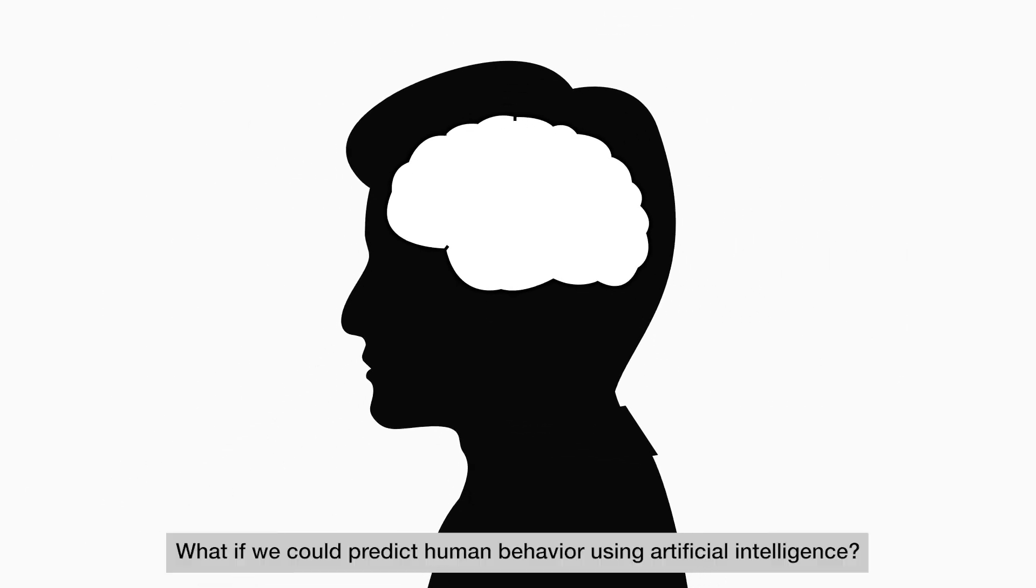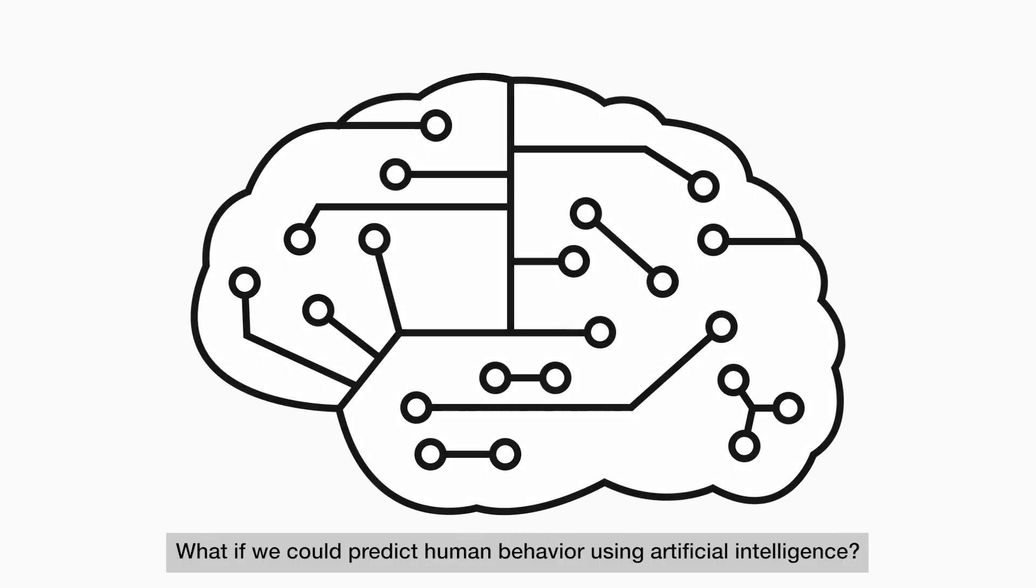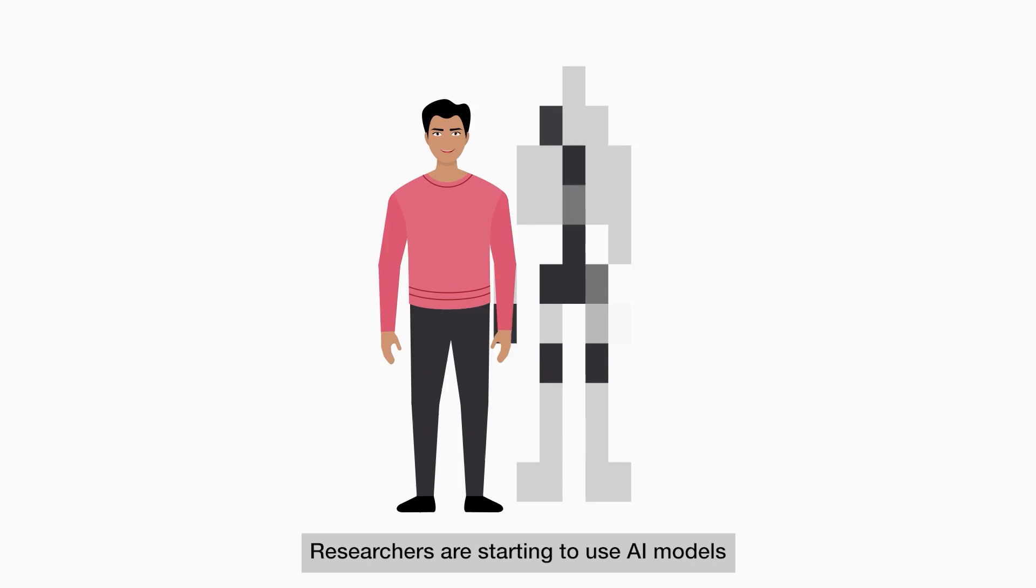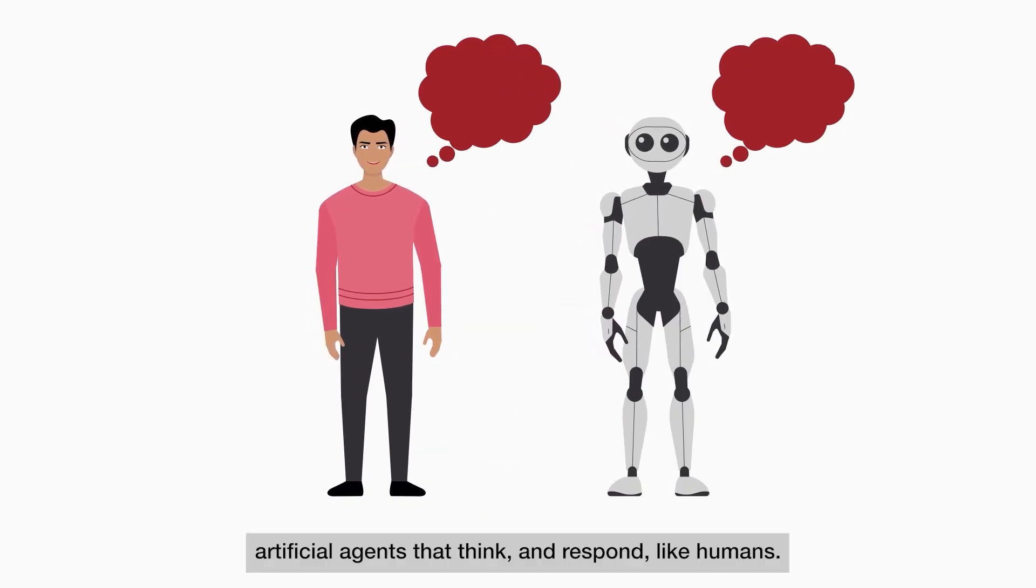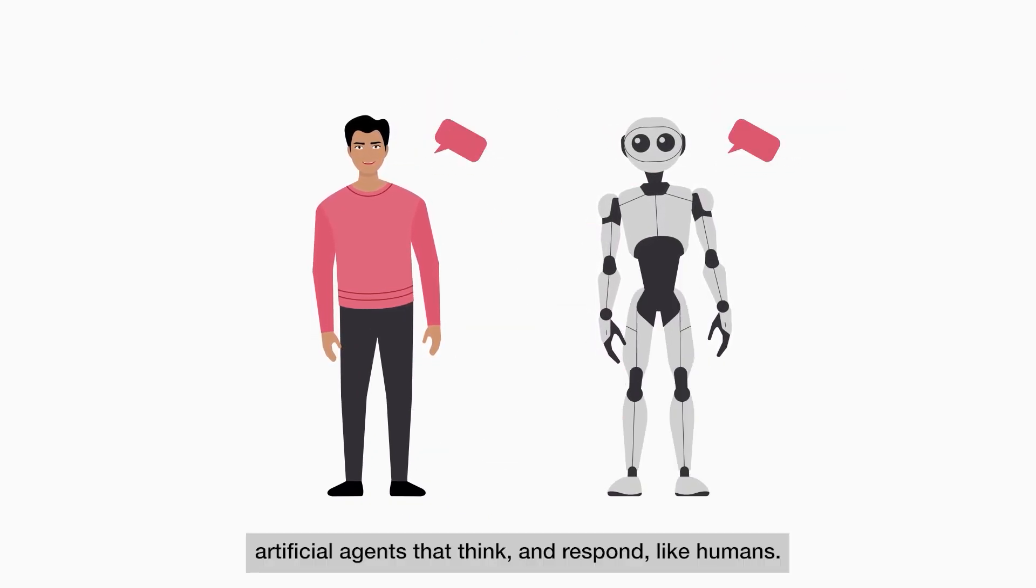What if we could predict human behavior using artificial intelligence? Researchers are starting to use AI models to create synthetic participants, artificial agents that think and respond like humans.